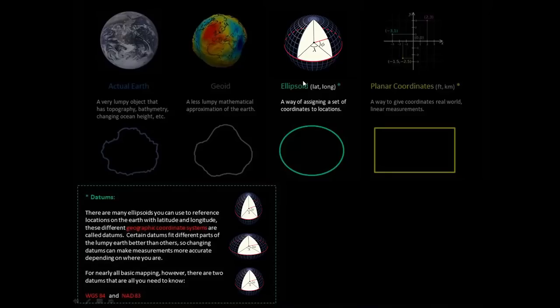So now that we've gone from the geoid, we've decided we're going to use one of these two datums, these geodetic datums, but now we want to measure something. And how do we do that? We have to go from ellipsoid to planar. And so in order to do that, we have to do something called a projection.